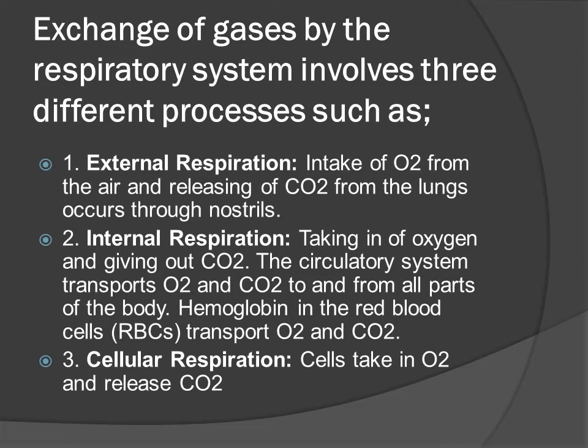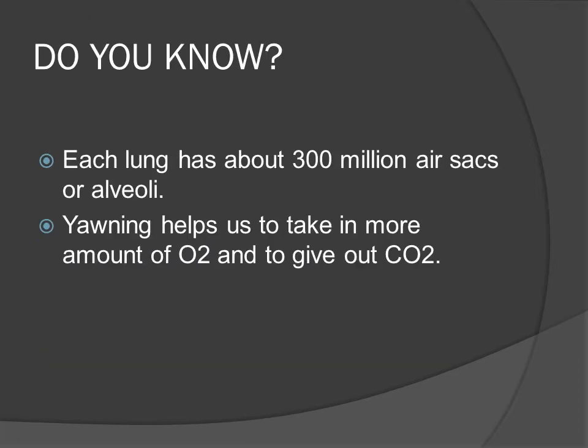Diffusion of gases by the respiratory system involves three different processes: external respiration — intake of O2 from the air and releasing of CO2 from the lungs; internal respiration — taking in of oxygen and giving out CO2; and cellular respiration — cells take in O2 and release CO2. The circulatory system transports O2 and CO2 to and from all parts of the body. Hemoglobin in red blood cells (RBC) transports O2 and CO2. Each lung has about 3 million air sacs (alveoli). Yawning helps us to take in more O2 and give out CO2.